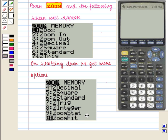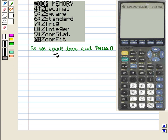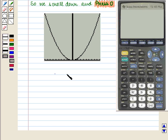We see at 0, zoom fit is written. We scroll down and press 0. We get the graph of Y equals X squared, which fits the screen.